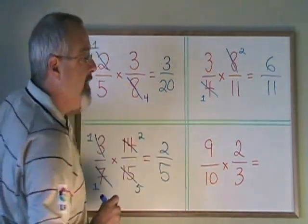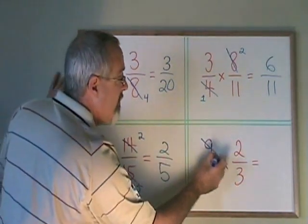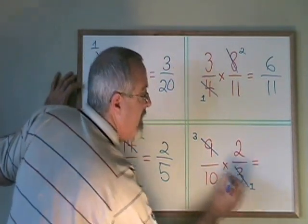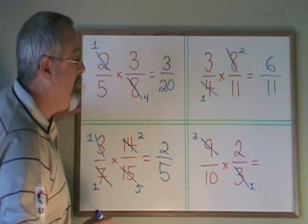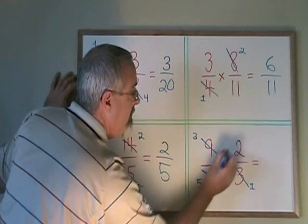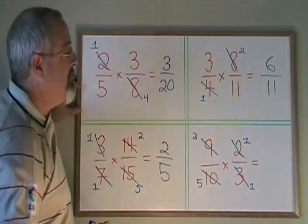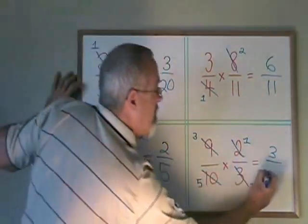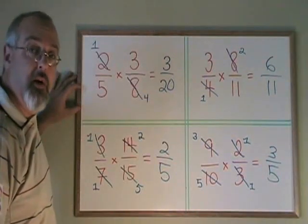Here, the 9 and the 3 share a common factor of 3. Dividing both by 3, I get 1 on the bottom and 3 on the top. The 2 and the 10 share a common factor of 2. Dividing both by 2, I get a 5 on the bottom and a 1 on the top. Now my multiplication is 3 times 1 on the top and 5 times 1 on the bottom. My final answer is 3/5, which cannot be reduced further.